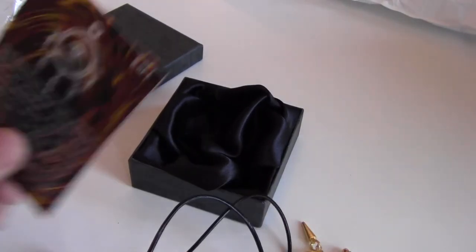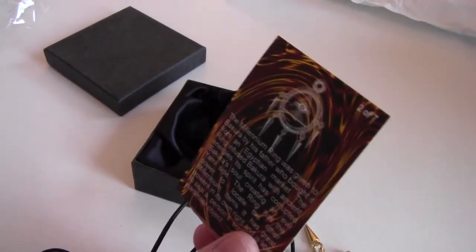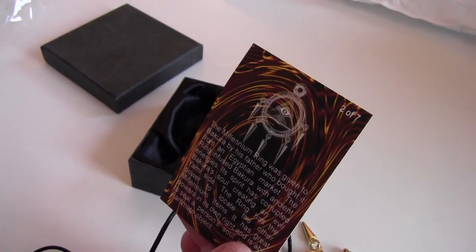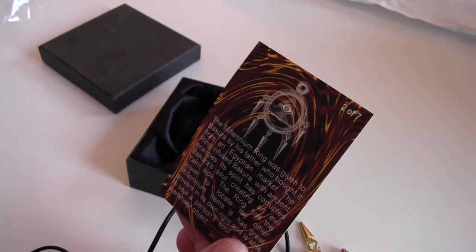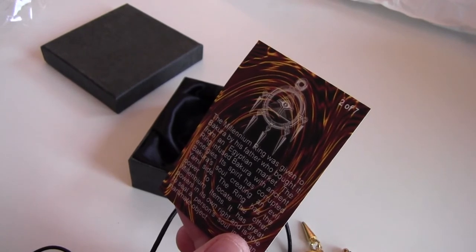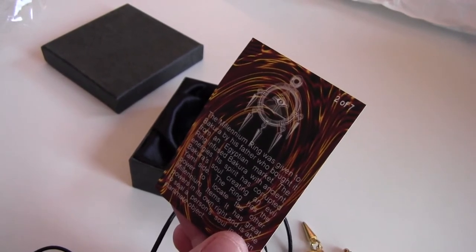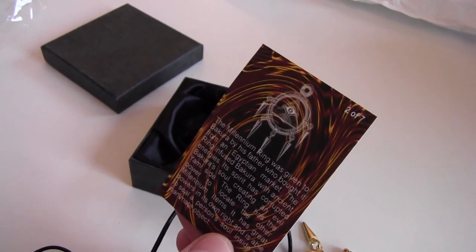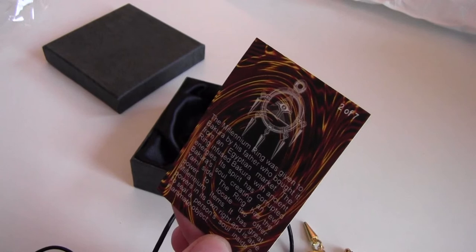And of course the card says something about the Millennium ring. The Millennium ring was given to Bokura by his father who bought it from an Egyptian market. The ring infused Bokura with ancient energies. Its spirit has corrupted Bokura's soul, creating an evil Yami inside. The ring has the power to locate the other Millennium items.